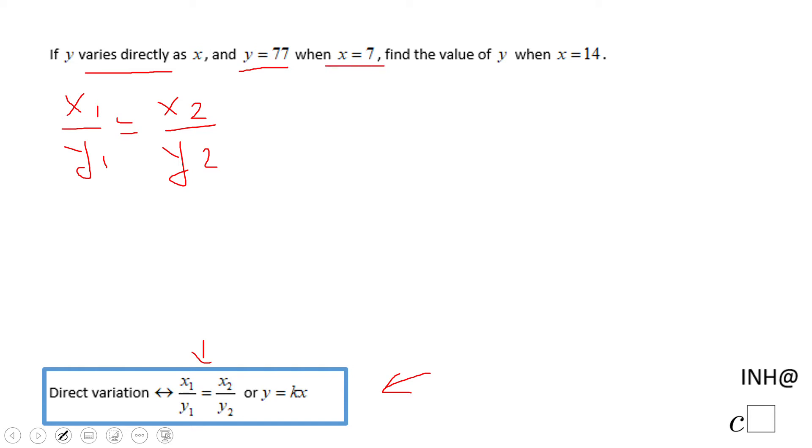In this case we look in here and we see y is 77 when x equals 7. So I'm going to call those y1 and x1, so that will be 7 over 77 equals, and now we're looking to the second part of the sentence which says find the value of y when x equals 14.